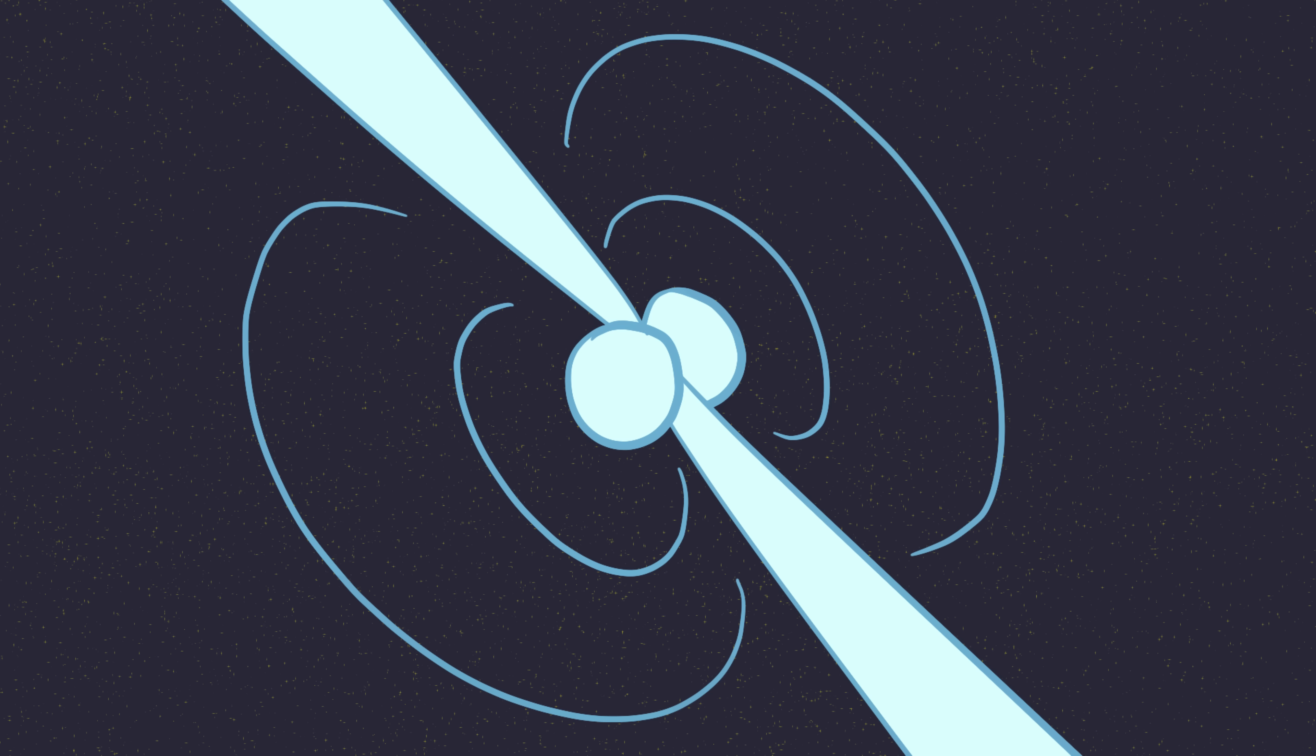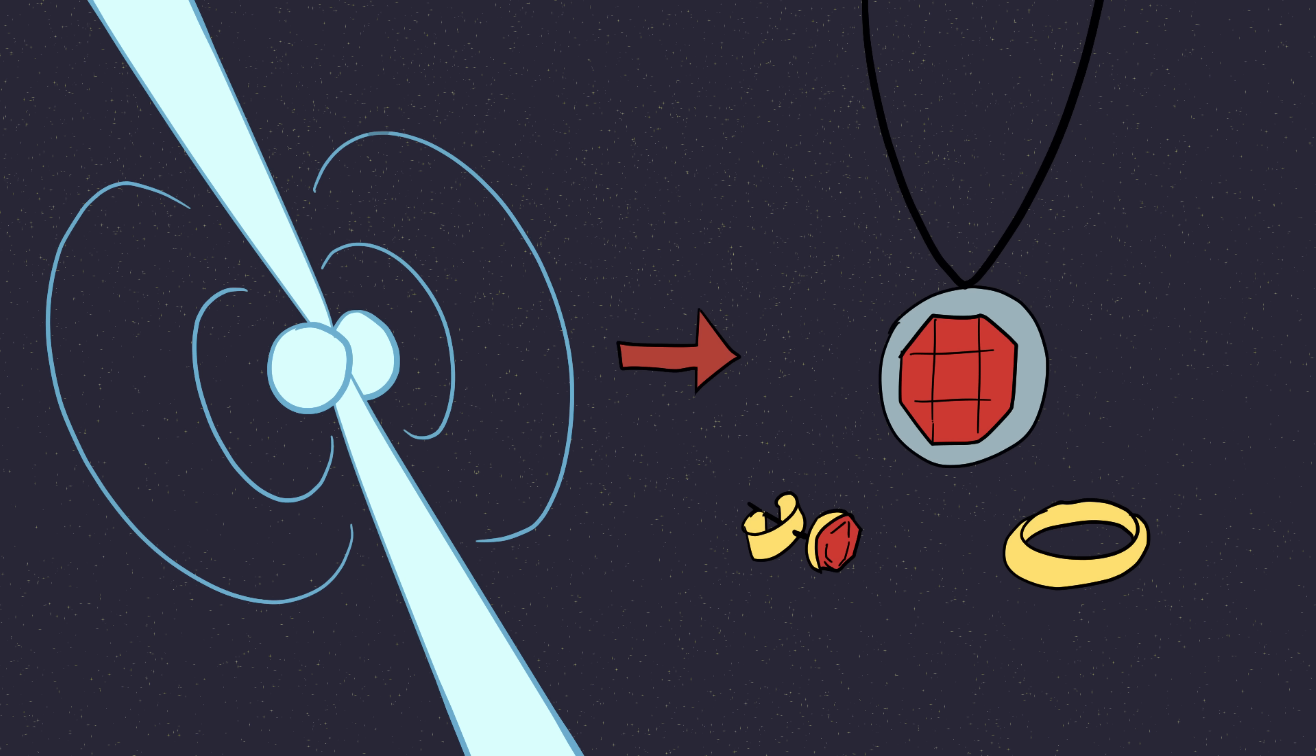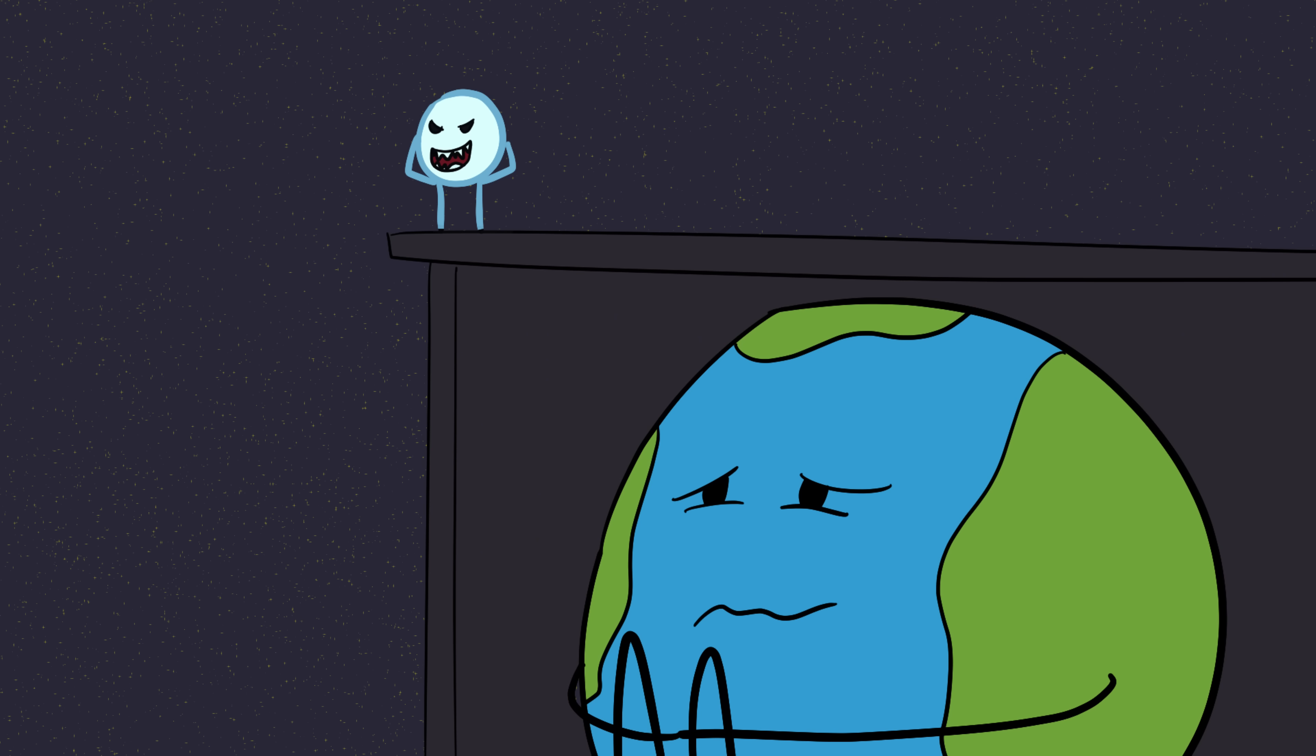When two neutron stars crash into each other, they don't just explode, they create gravitational waves, rippling spacetime itself. The last time scientists detected one of these collisions, it also produced heavy elements, such as gold and platinum. So yes, the jewelry you're wearing? Probably forged in one of the most violent events in the universe. Space horror and bling all in one package.